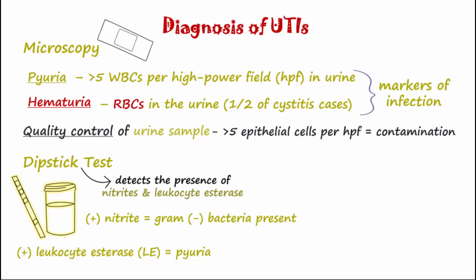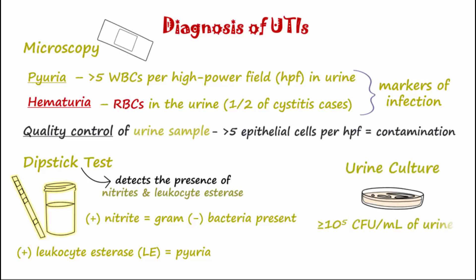The standard threshold to establish bacterial colonization reflective of bacteriuria is greater than 10 to the fifth colony-forming units per mL of urine. A gram stain may be performed on the acquired culture to determine the cause of the bacteria in the UTI patient.